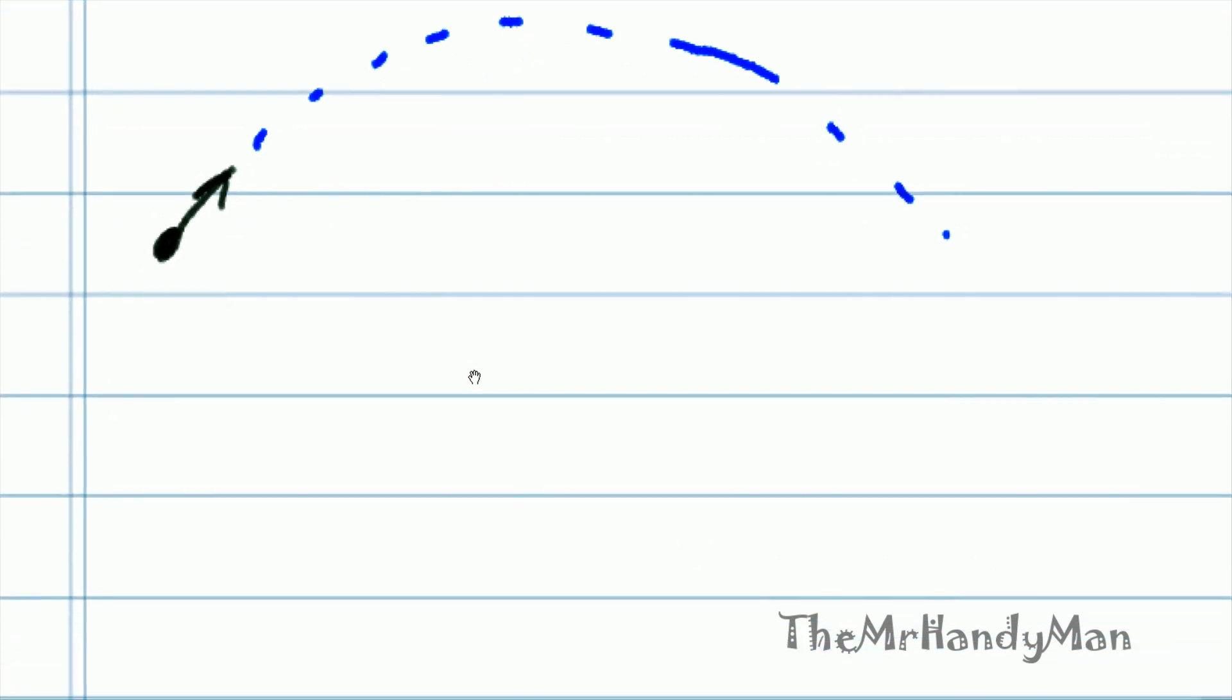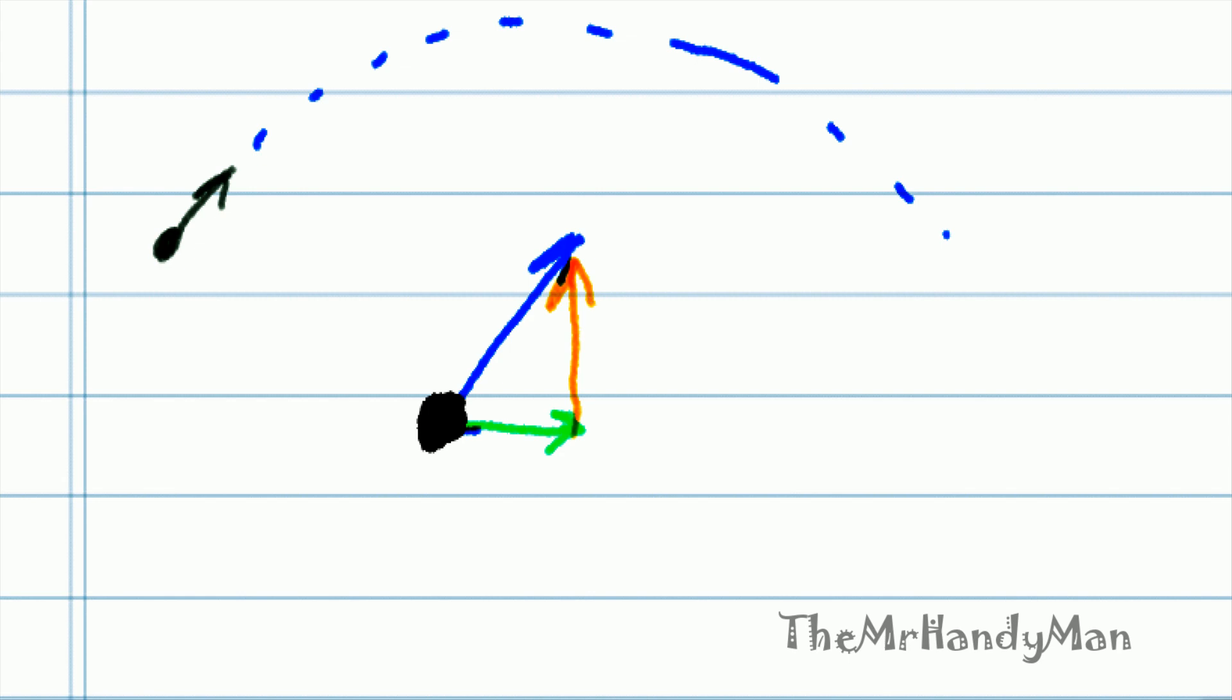Namely, if we have our ball, we can break it up into both the X components, which is in green, and the Y components, which is in orange. So what you'll find is that the only forces acting on that given ball is going to be gravity.